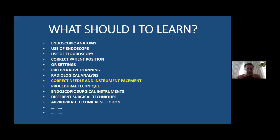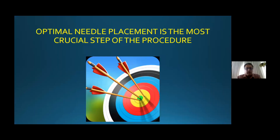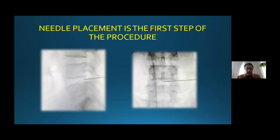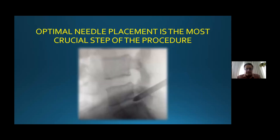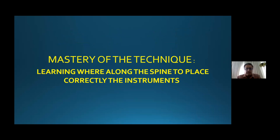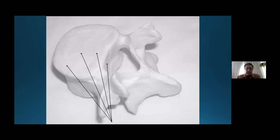I think the first step of the surgery is the correct needle placement and correct instrument placement for success, because the optimal needle placement is the most crucial step of this procedure. This is a simple example of a transforaminal approach operation. If we don't have good instrument placement, we will not have success. The mastery of the technique is learning where along the spine to correctly place the instruments.